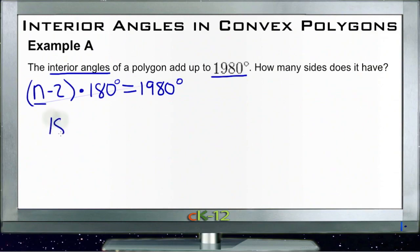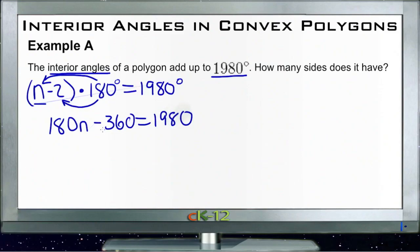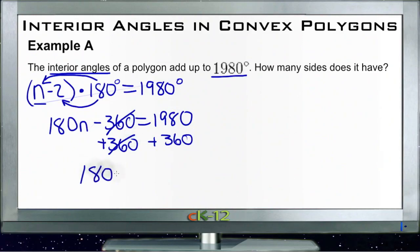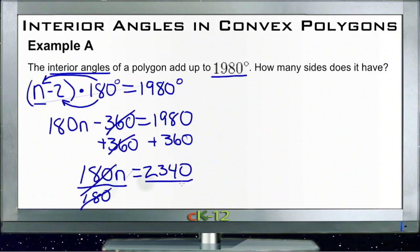We get 180 times n, then negative 2 times 180, giving us 180n minus 360 equals 1980. Then we add 360 to each side, which cancels, and we have 180n equals 2340. Then we divide both sides by 180, which cancels, leaving just n. And n equals 2340 divided by 180, which is 13.